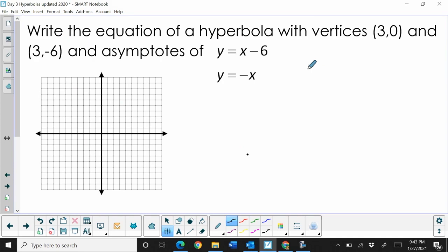It says write the equation of a hyperbola with vertices at (3,0) and (3,-6). So one, two, three, four, five, six. That tells us right away which way it faces - it's going to go up and down, so my y² is first minus x².